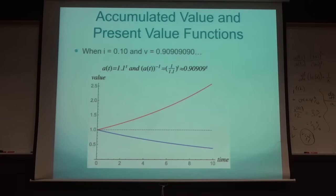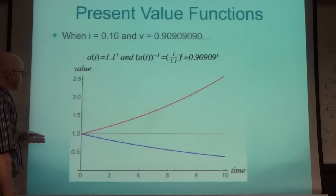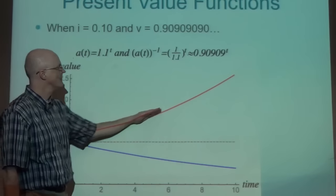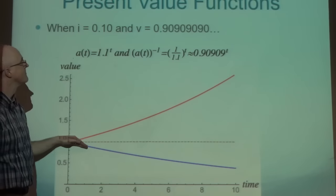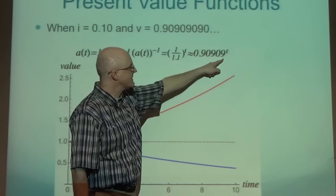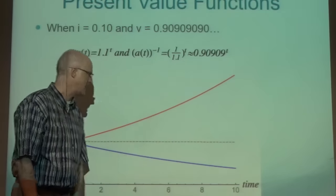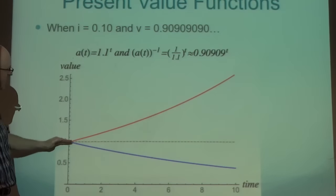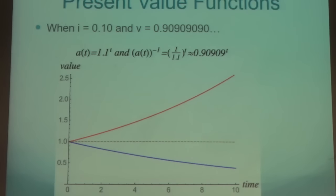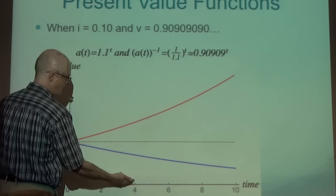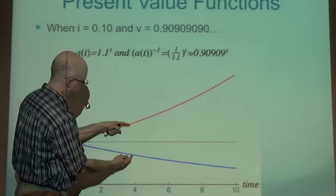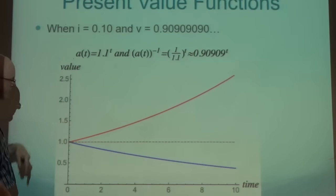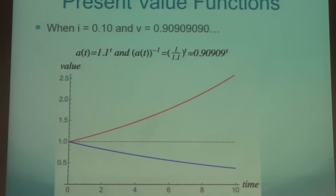Both can be thought of as functions of time: 1.1^t (red graph) is exponential growth; 0.909...^t (blue graph) is exponential decay - it's the reciprocal. For any value of t, say t=4, the outputs of these two functions multiply to 1, since they are multiplicative inverses of each other.